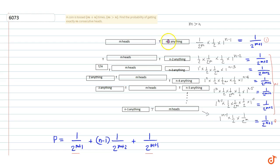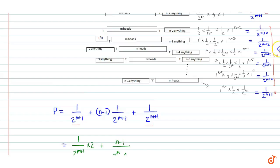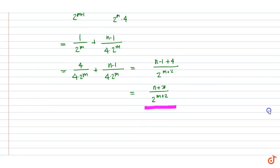One important thing to note: in the intermediate cases there are n minus 1 heads or tails in the remaining positions. Since m is greater than n, it is guaranteed that no consecutive m heads occur in that portion. That is what we need to know, and that is our answer.